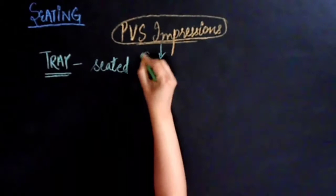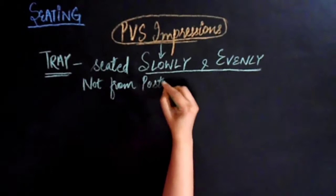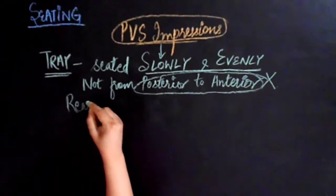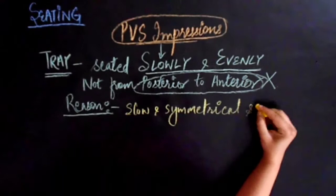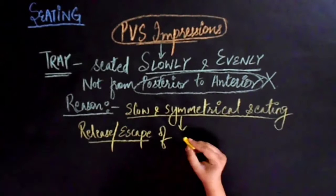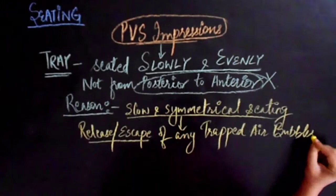In case it is a previous impression, you need to take care that the tray should be seated slowly and evenly, not from posterior to anterior as we did for alginate materials. The reason for slow and symmetrical seating for previous impressions is that this would allow any trapped air bubbles in the previous material to release or escape.